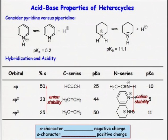We can explain this because the more S character in an orbital, the closer it is to the nucleus. Therefore, a negative charge would be stabilized by the positively charged nucleus. If we use this same line of thinking and look down the nitrogen series, we see that a positive charge wants to be as far away from the nucleus as possible, and it can do that in an SP3 hybrid orbital over SP2 and SP hybrid orbitals.